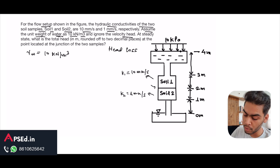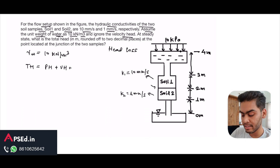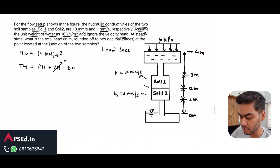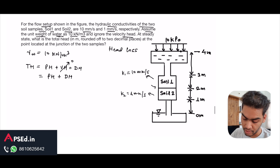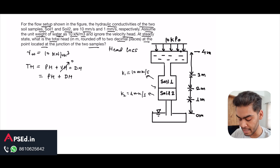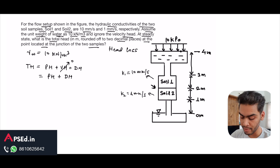We are told to ignore the velocity head. Generally, total head is the summation of pressure head plus velocity head plus datum head, but for flow in soils the velocity head is very small and we neglect it. So total head equals pressure head plus datum head. At steady state, we need to find the total head at the junction of the two soil samples.